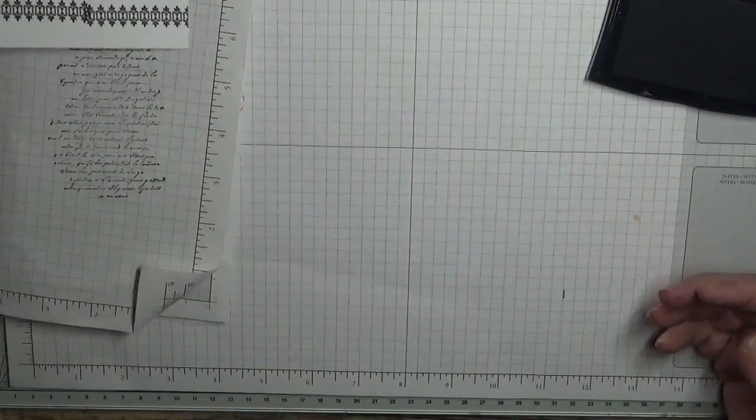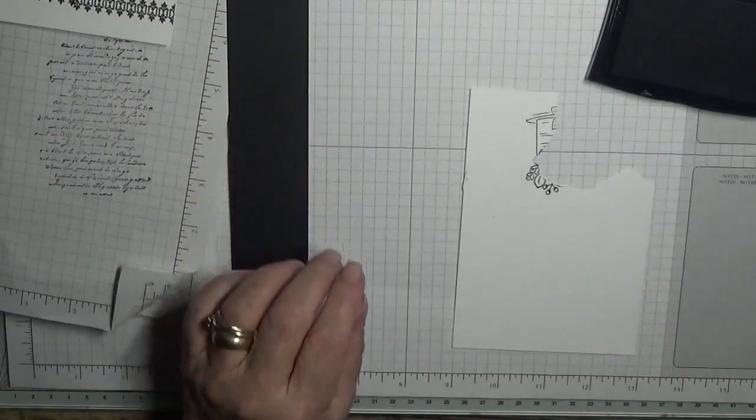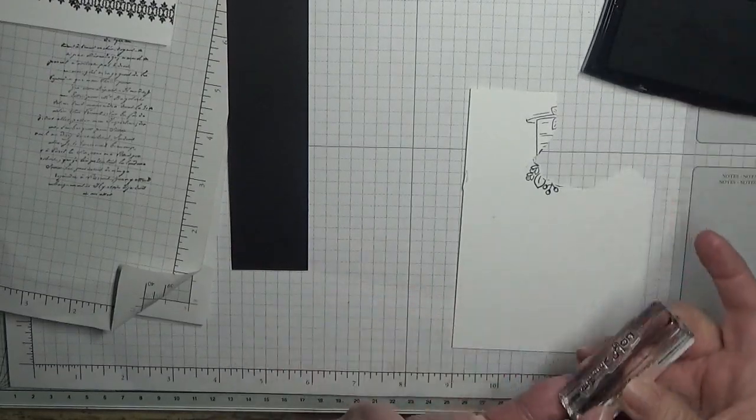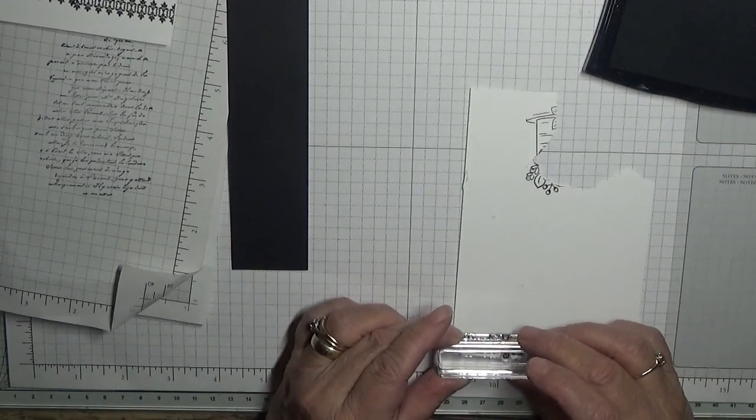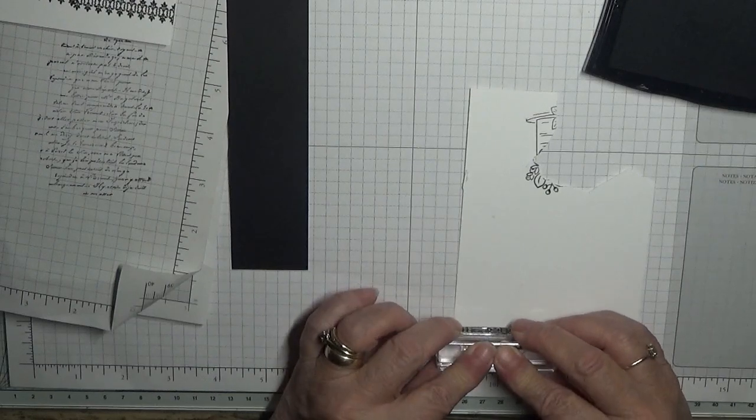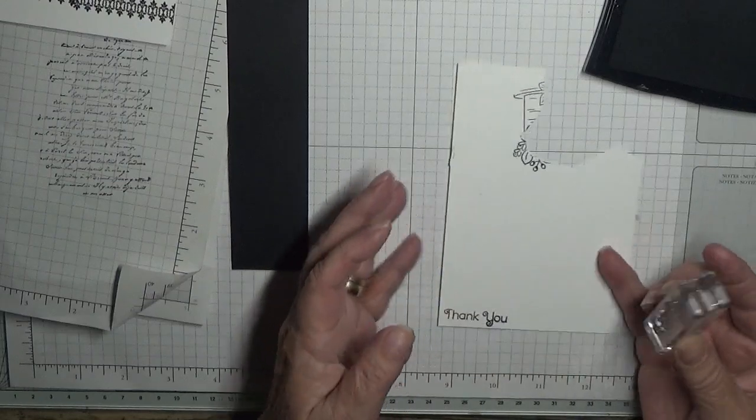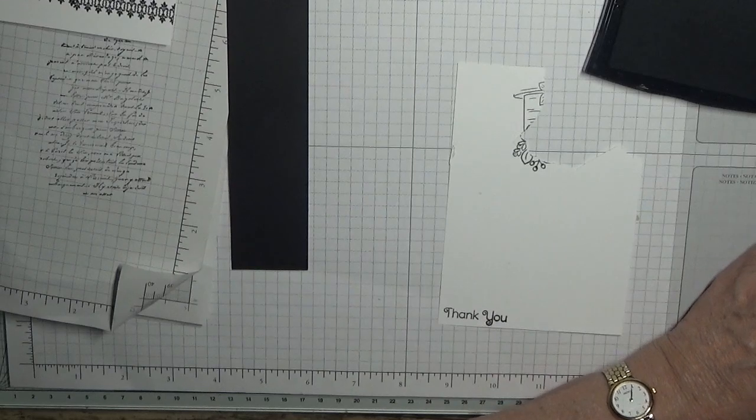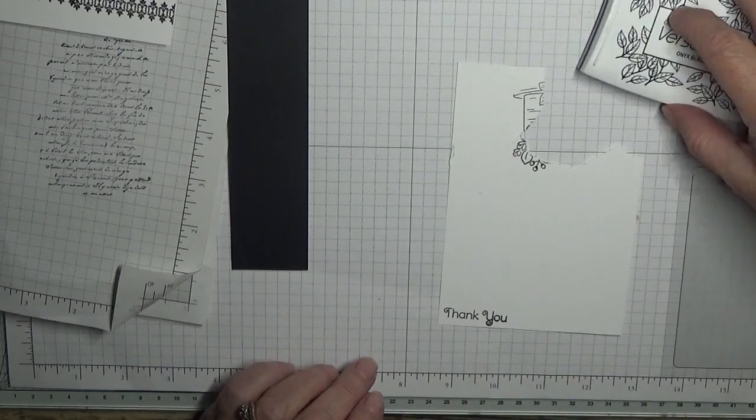Right. Leave that to dry a minute. And with a scrap of white, we'll get our thank you. And we'll just pop that right at the bottom here. And stamp that. And clean that. Right. That's our stamping done.